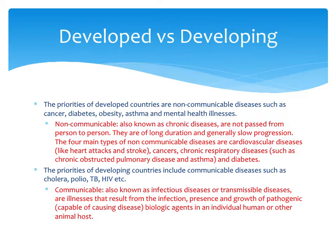Non-communicable diseases, also known as chronic diseases, are not passed from person to person. They are generally long in duration and slow in progression. The four main types are cardiovascular disease, cancers, chronic respiratory diseases, and diabetes. In contrast, the priorities of developing countries generally include communicable diseases such as cholera, polio, tuberculosis, and HIV — showing very different priorities between developed and developing countries.